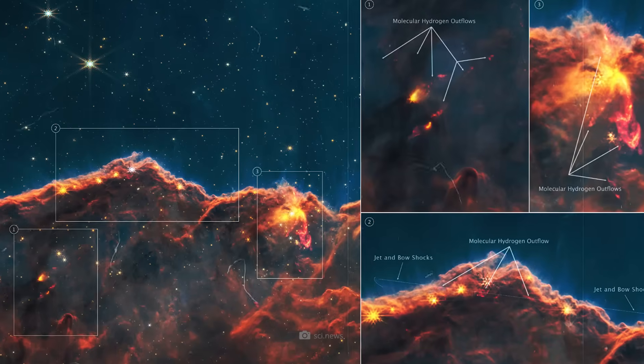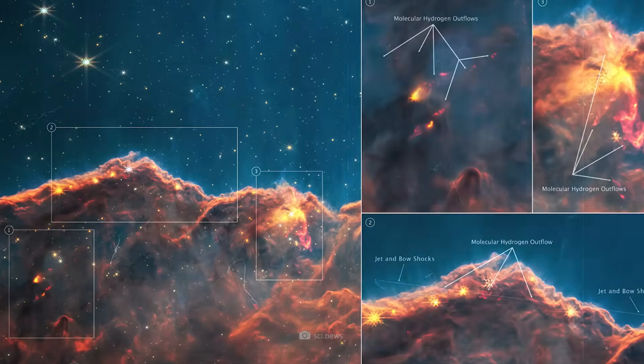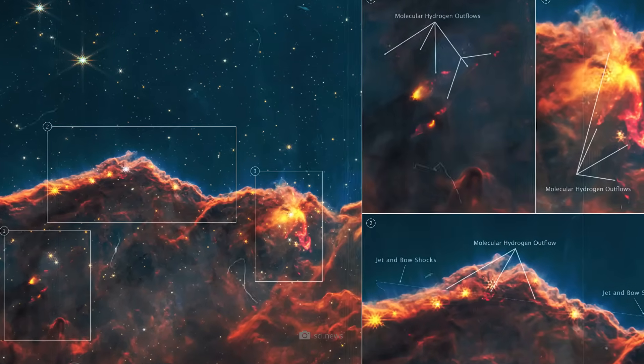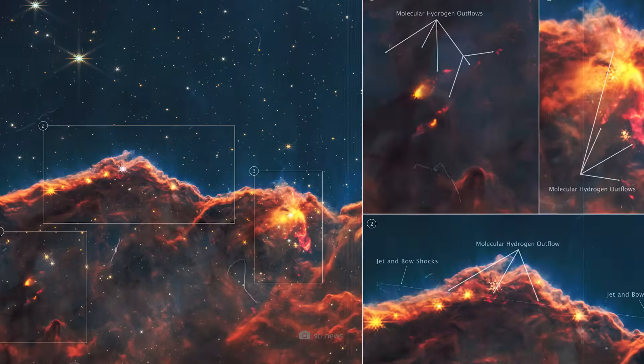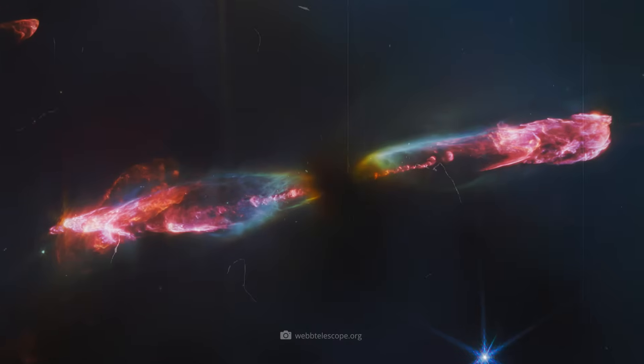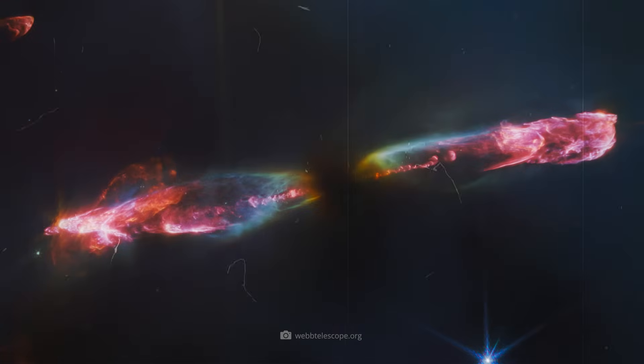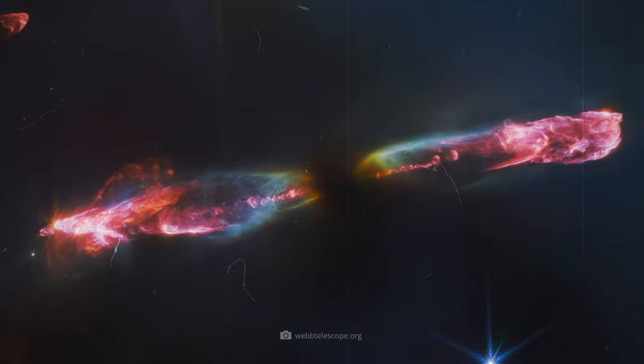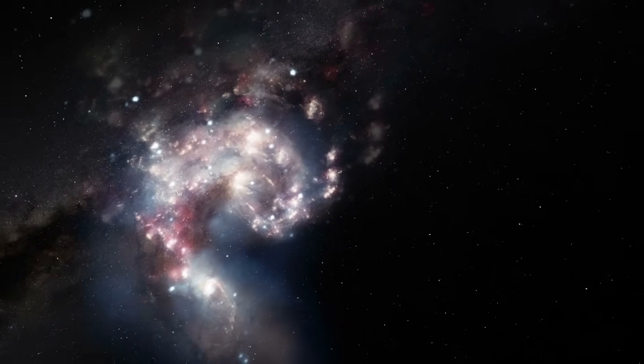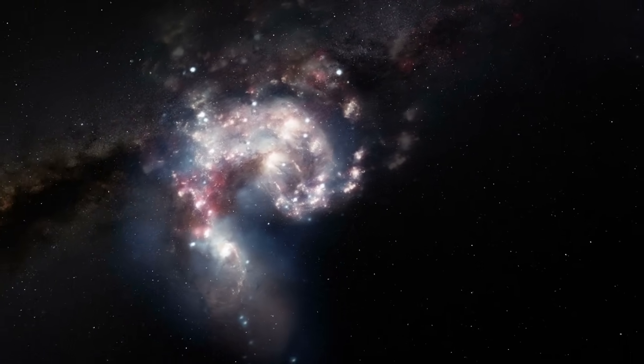Every spiral in the protoplanetary disk, every ejected jet, every clump of gas and dust tells an ancient story. So far, our scientists have pieced together the story of gravity, matter, and the emergence of order from chaos.